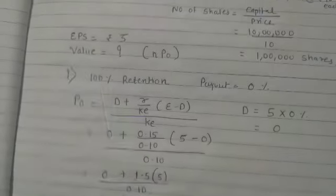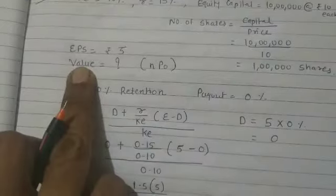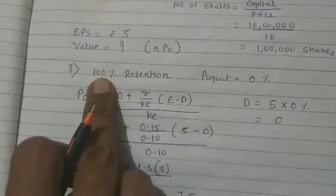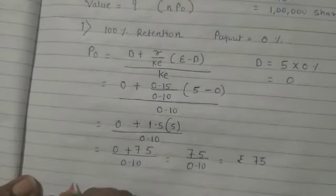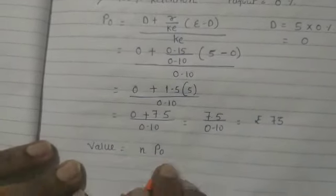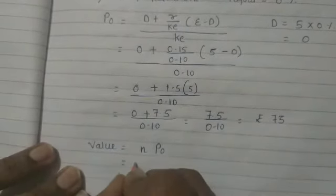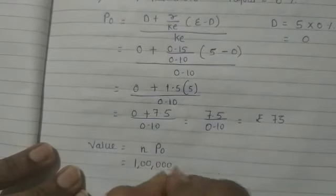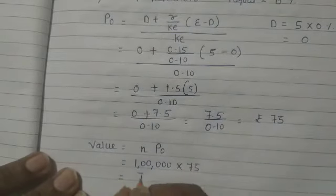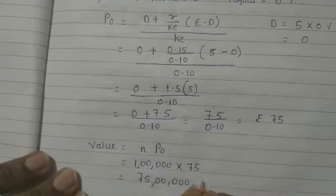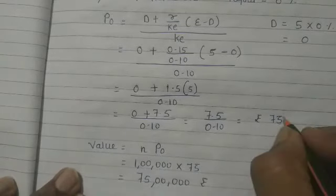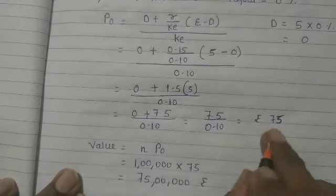But the question asks for value of the firm, not just price of the share. Value = Number of shares × Price (NPO). So value = 1 lakh × 75 = Rs. 75 lakhs. Remember, in Walter's model payout ratio is more important than retention ratio for calculation.